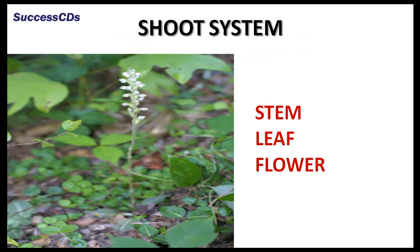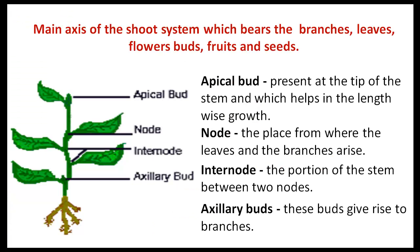The shoot system is found above the soil. The stem is the main axis of the shoot system which bears the branches, leaves, flower buds, fruits and seeds. It has an apical bud present at the tip of the stem which helps in lengthwise growth. Nodes are places from where the leaves and branches arise. The portion of the stem between two nodes is called the internode, and there are axillary buds too, which give rise to branches.